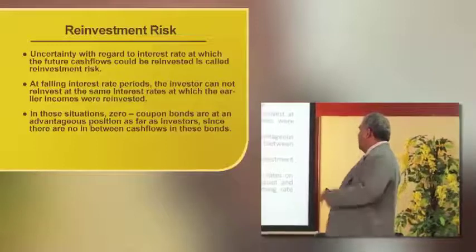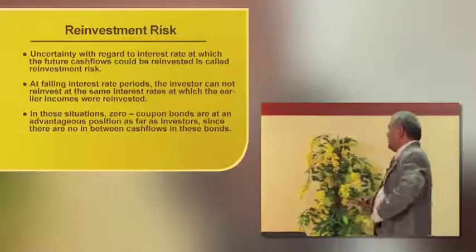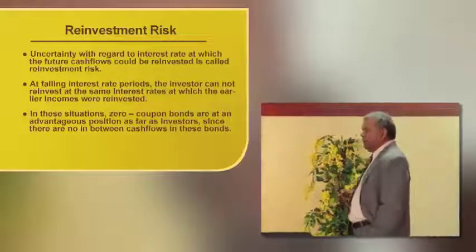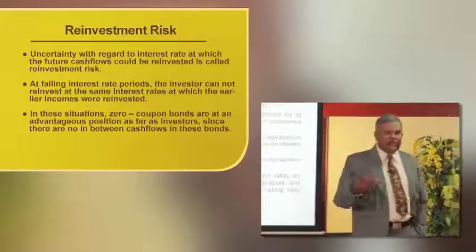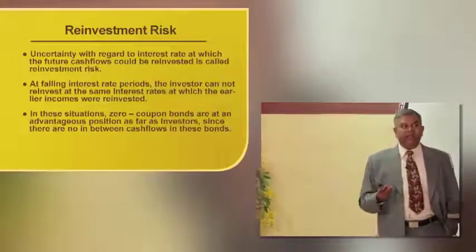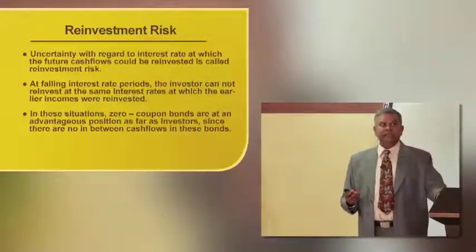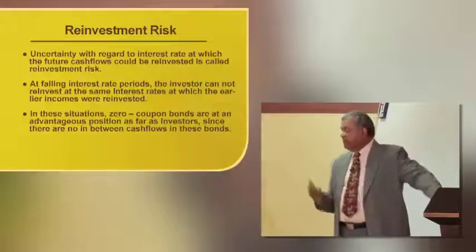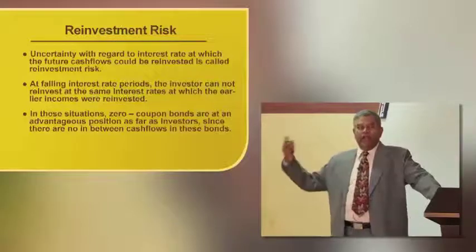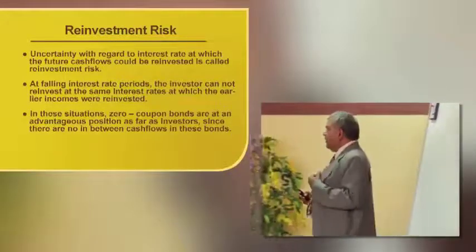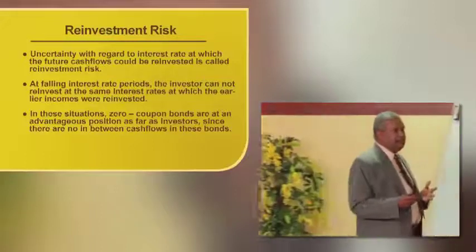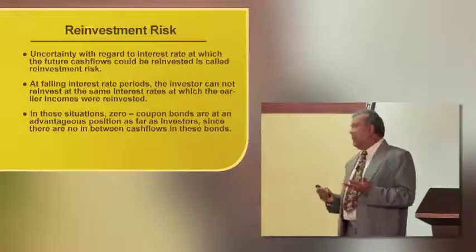In these scenarios, zero coupon bonds are at an advantageous position for investors since there are no in-between cash flows. In zero coupon bonds, there is no intermittent cash flow available. If quarterly interest is linked to a floating rate, every three months when the interest rate goes up, the bank has to pay more interest. Whereas in zero coupon bonds, you accept the deposit today and pay with interest only on the due date — one fixed interest rate paid with principal on due date only. The interest rate risk is therefore very low.